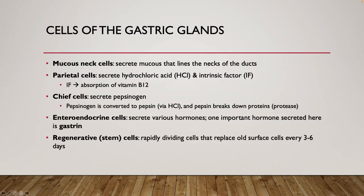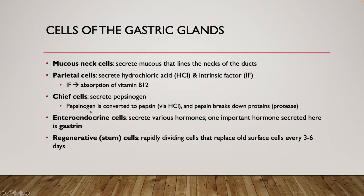The different cells lining the gastric glands each have specific secretions. Mucus neck cells secrete mucus, as their name suggests. Parietal cells secrete hydrochloric acid as well as something called intrinsic factor. Chief cells secrete pepsinogen — the ending '-ogen' almost always means the molecule is in an inactive form. Pepsinogen is the inactive form of pepsin, and it is converted to pepsin via hydrochloric acid from the parietal cell. Pepsin is a protease — an enzyme that helps break down proteins. Enteroendocrine cells, most commonly the G cell, secrete the hormone gastrin.